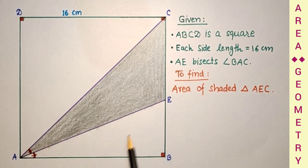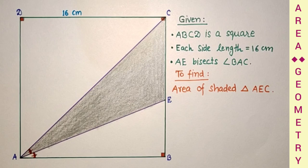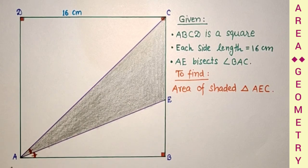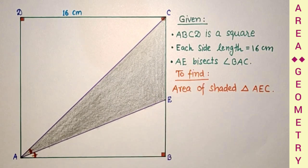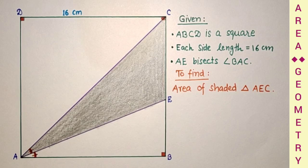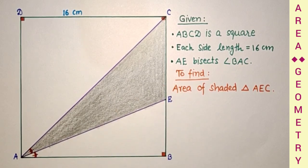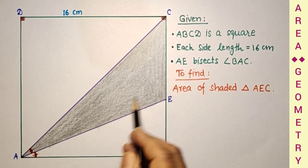In this question we are given a square ABCD whose side length is 16 cm, and AE bisects angle CAB. That means AE is angle bisector of angle CAB. We have to find this shaded portion's area. This question is a 10th grade geometry question.